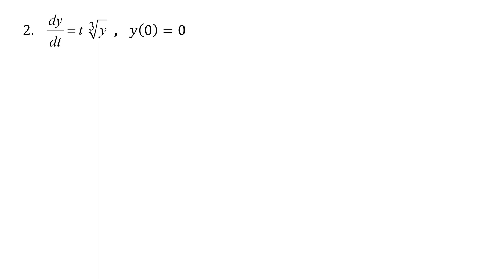We're going to look at another example — this is example two from our notes packet from class. Here we have a first-order nonlinear differential equation because of the cube root applied to y, the dependent variable, with t as the independent variable. This is a separable differential equation because the right side can be written as a product of a function of t times a function of y — it's really already written in that form.